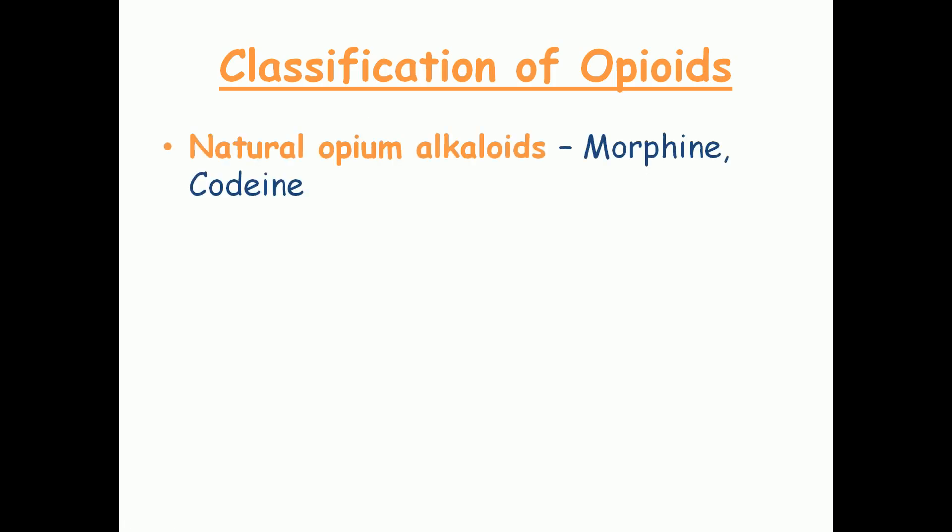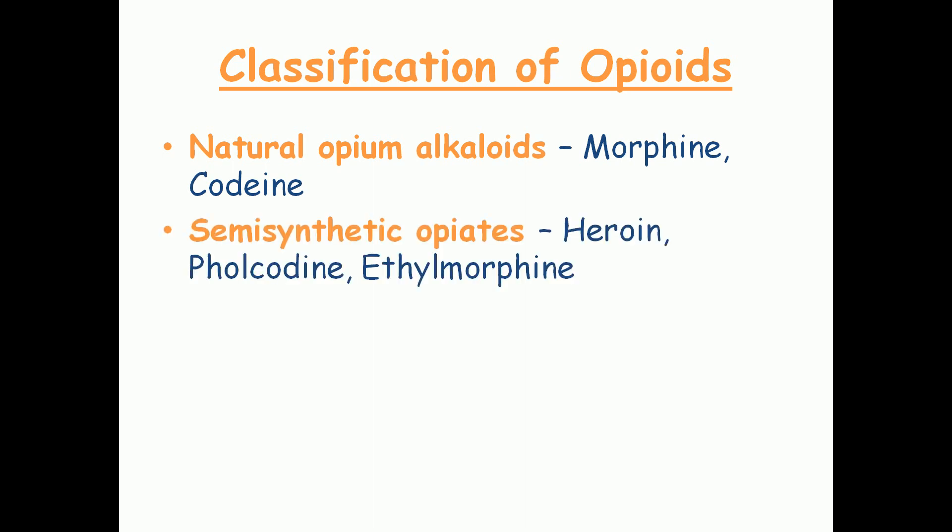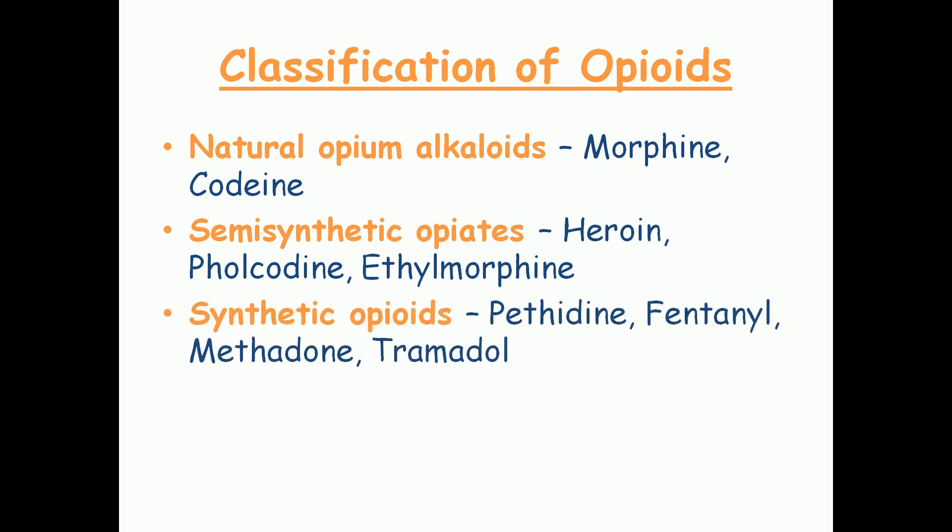Opioids are classified into natural alkaloids such as morphine and codeine; semi-synthetic opioids such as heroin, pholcodeine, and ethylmorphine; and synthetic opioids such as pethidine, fentanyl, methadone, and tramadol.